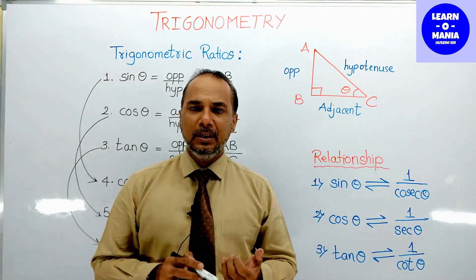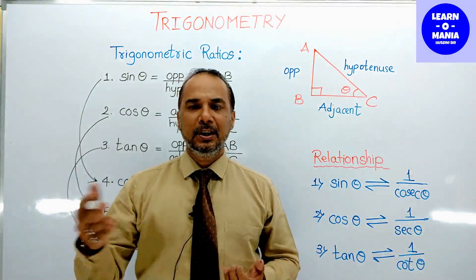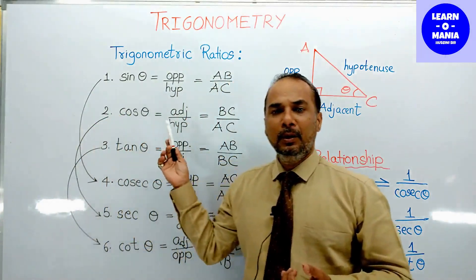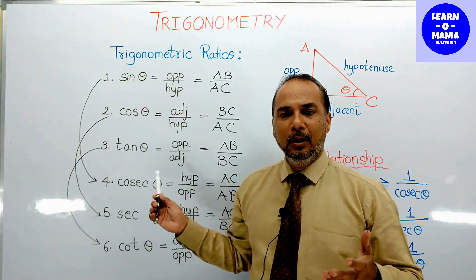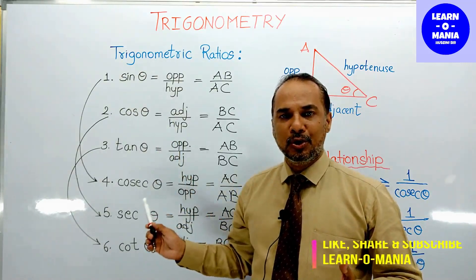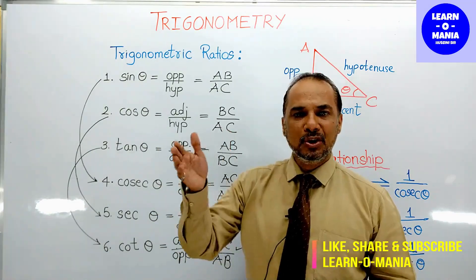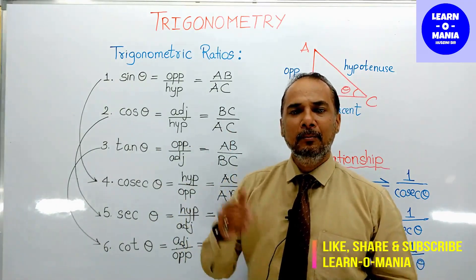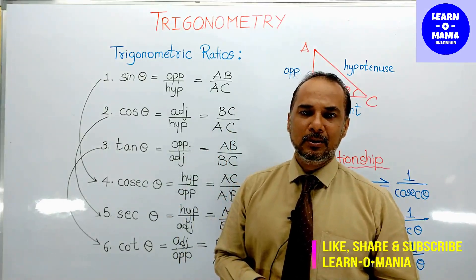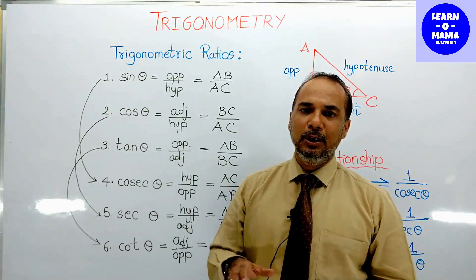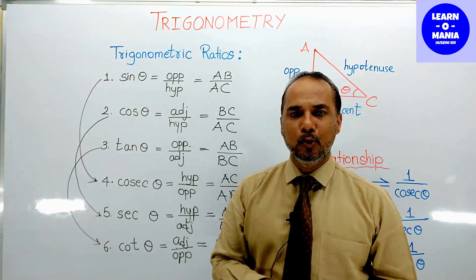Remember: sin theta is opposite upon hypotenuse. Cos theta is adjacent upon hypotenuse. Tan theta is opposite upon adjacent. Sin theta's inverse is cosec theta — cosec theta is hypotenuse upon opposite. Cos theta's inverse is sec theta — sec theta is hypotenuse upon adjacent. Cot theta is the reciprocal of tan theta — cot theta is adjacent upon opposite.